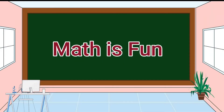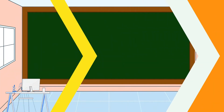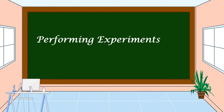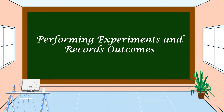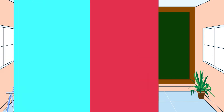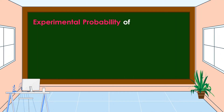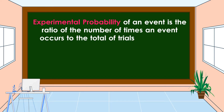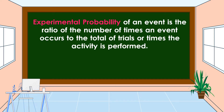Hello everyone, welcome to Math is Fine. Our lesson for today is all about performing experiments and recording outcomes. Experimental probability of an event is the ratio of the number of times an event occurs to the total number of trials or times the activity is performed. This is the formula for how to find the experimental probability.